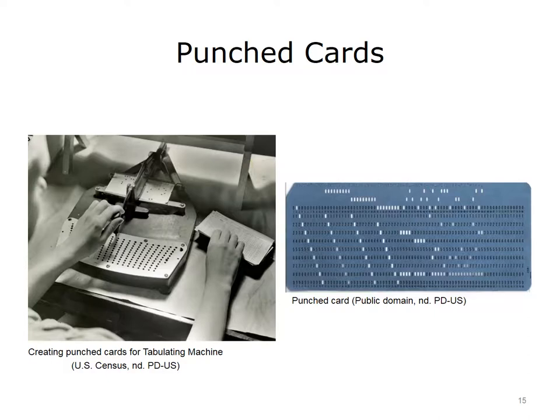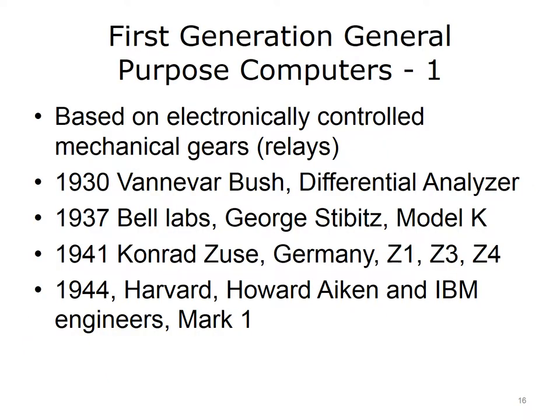Punched cards were the primary method for data entry and storage to a computer from about 1900 until 1950, and were still used for data entry and programming into the 1970s until keyboards became the preferred method for input. In the early 20th century, several computers were developed that are now known as the first generation general purpose computers. General purpose computers are used for a variety of different programs, provide a variety of different types of operations, and can be programmed — they are not created specifically for a single task. The first ones were based on electronically controlled mechanical gears or relays.